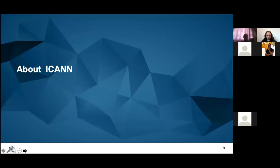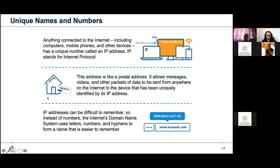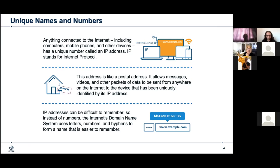ICANN stands for the Internet Corporation for Assigned Names and Numbers. The term 'names' refers to domain names, and 'numbers' refers to IP addresses — the internet needs both to function. The internet's technical infrastructure actually understands IP addresses; it does not natively understand domain names, so the domain name system operates at upper levels.